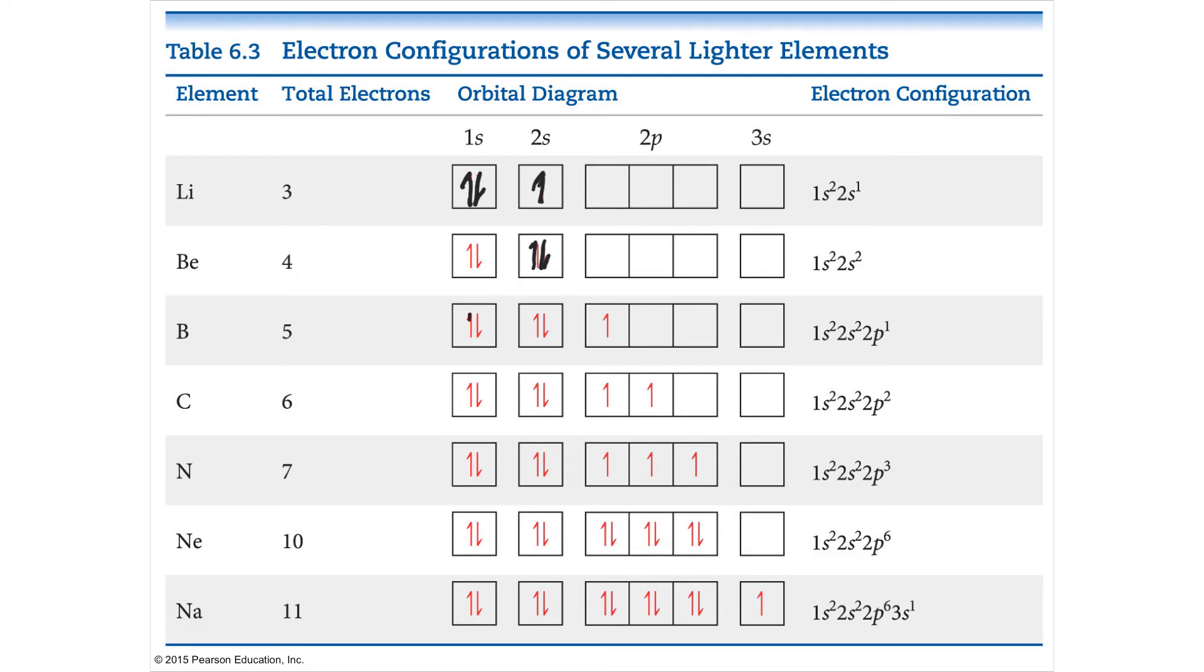When you get to boron, you've got all of 1s full, you've got 2s full, and now it has to start going into the 2ps. 2p has the next highest energy, and so you're going to start giving each kid their room. So carbon gets her own room. Nitrogen gets her own room. Once you get to neon, or after nitrogen, when you have oxygen, you'll start doubling up. And then there's the next one, fluorine, and there's the next one, neon. Neon now has a full shell.